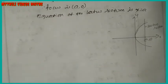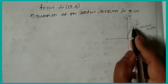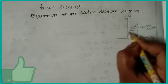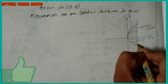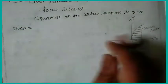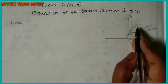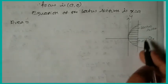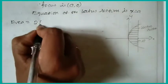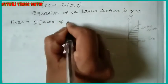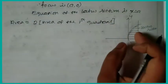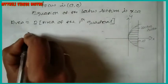Now we have to find the area. This is the parabola, and this is the required area. We write the formula: the area equals 2 times the area of the first quadrant — because the second quadrant is symmetric. So, area = 2 × area of the first quadrant.